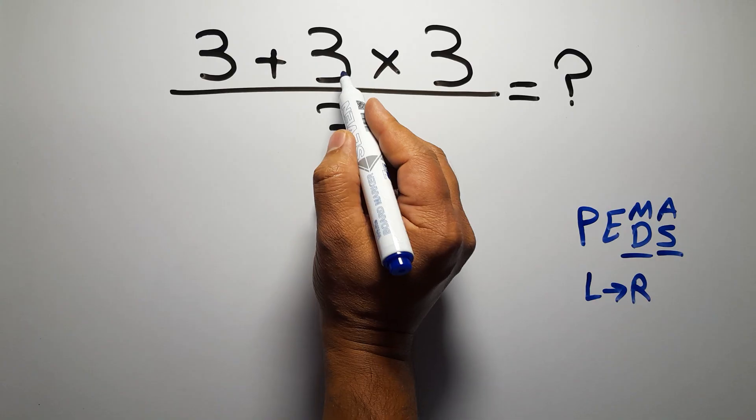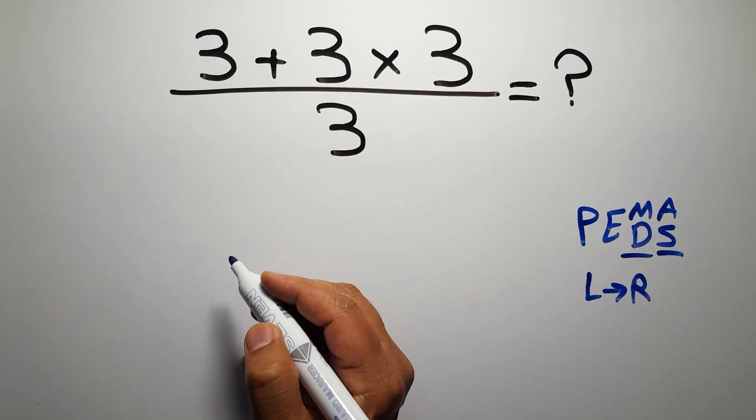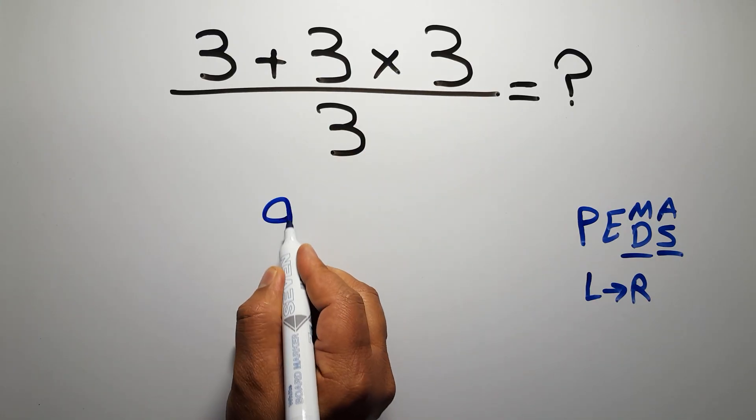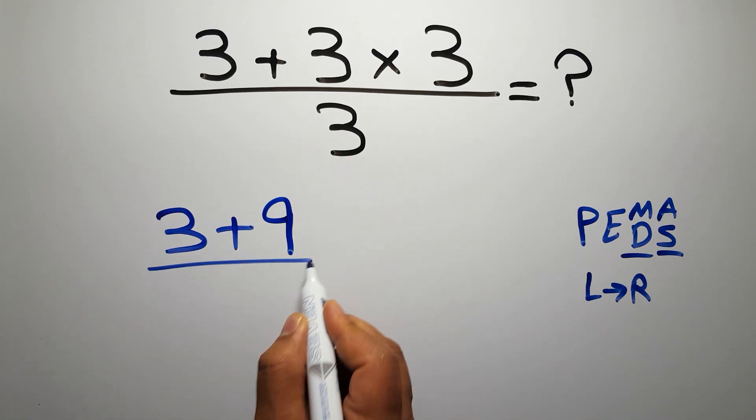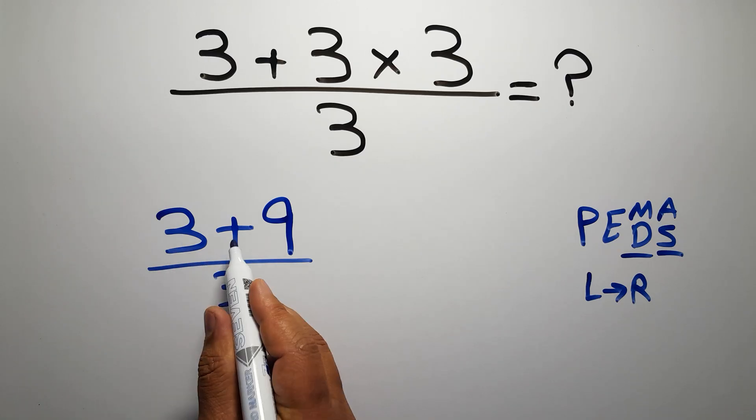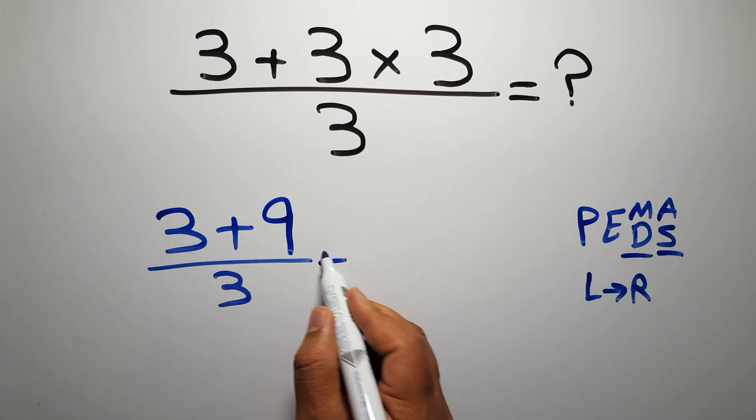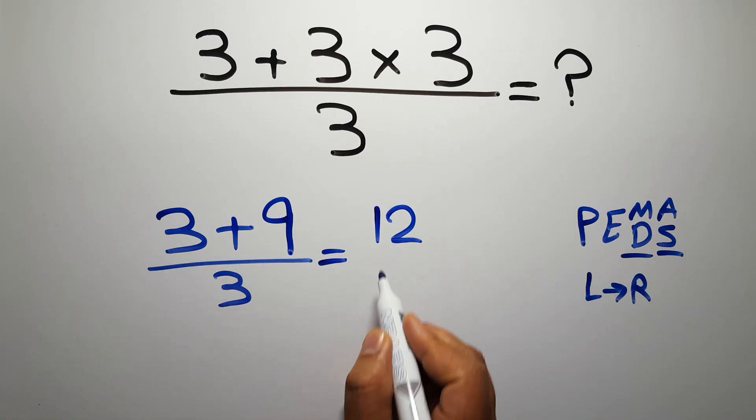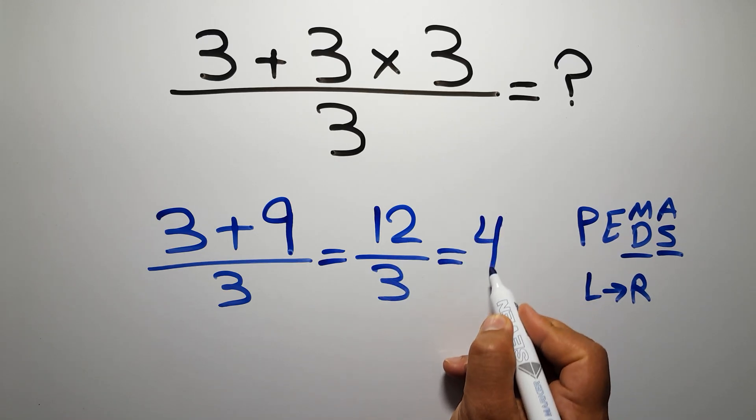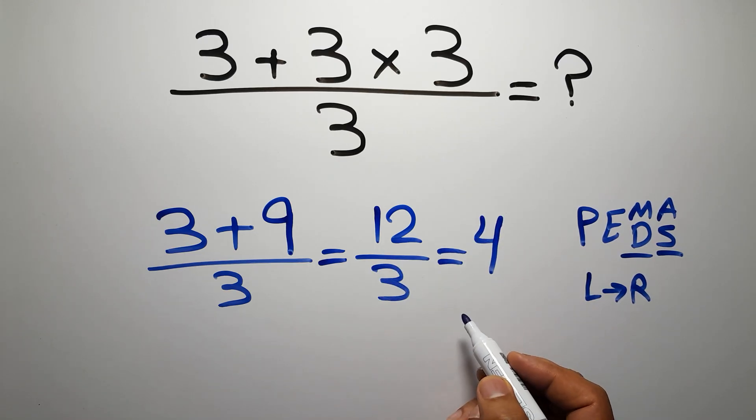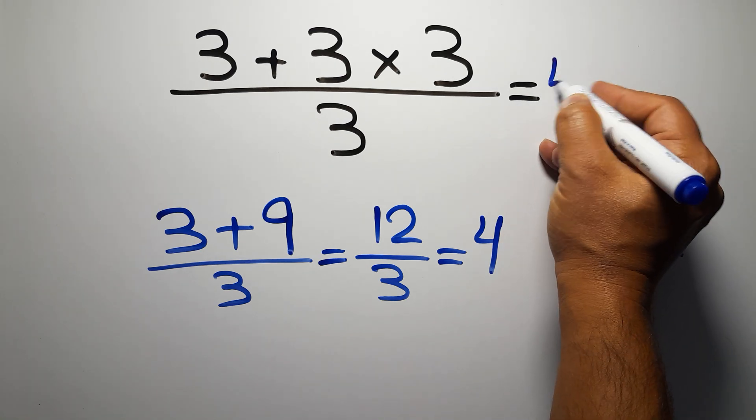So first 3 times 3, which gives us 9. So 3 plus 9 over 3. Now this addition: 3 plus 9 gives us 12. So 12 over 3, which equals 4. And this is our final answer to this problem. The correct answer is 4.